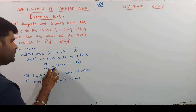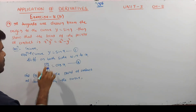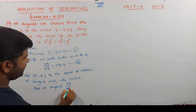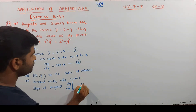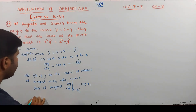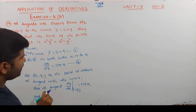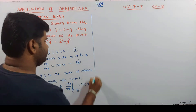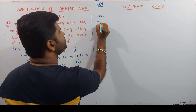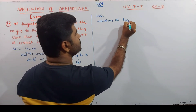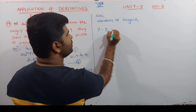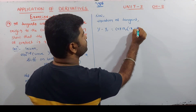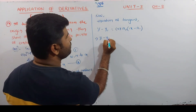Slope of tangent at point (x1, y1) is dy/dx = cos x1. Equation of tangent: y - y1 = cos x1 · (x - x1). Since y1 = sin x1 from the curve equation.